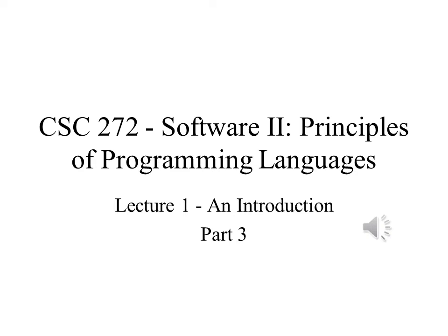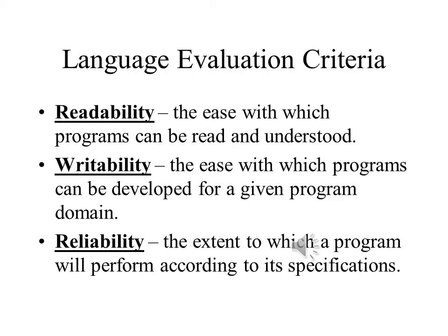In Part 3 of Lecture 1, we will start taking a look at the criteria that determine how good a language is or isn't. The first criterion we will look at is readability. What makes a programming language good or bad? Generally, we need to be able to use it to write programs easily that can be understood and that we can be certain will work correctly. These requirements can be described as readability, writeability, and reliability.